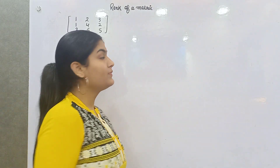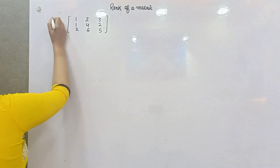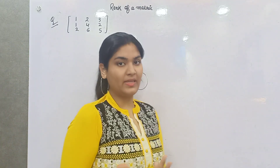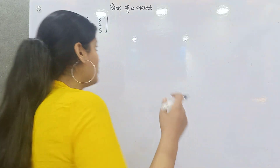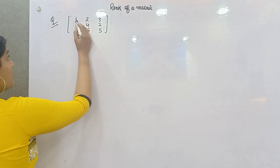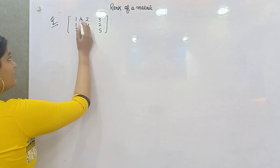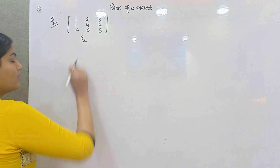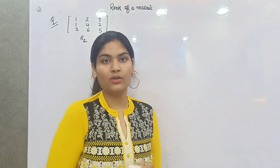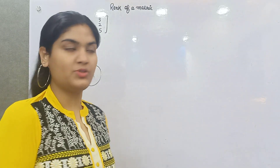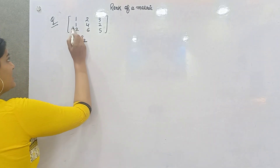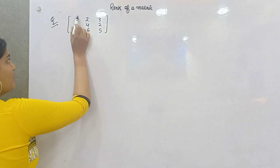Let me show you how we can calculate it. Here is an example of a 3×3 order matrix. Try to make an identity matrix if it is possible. You have a 1 here, so now apply elementary transformations — whether row transformations or column transformations. You can make these two entries zero by keeping this row constant.